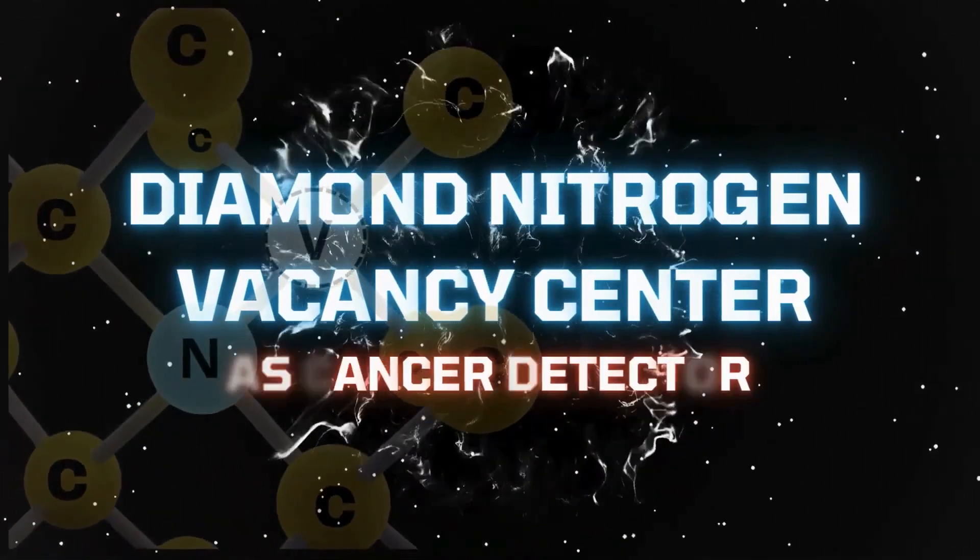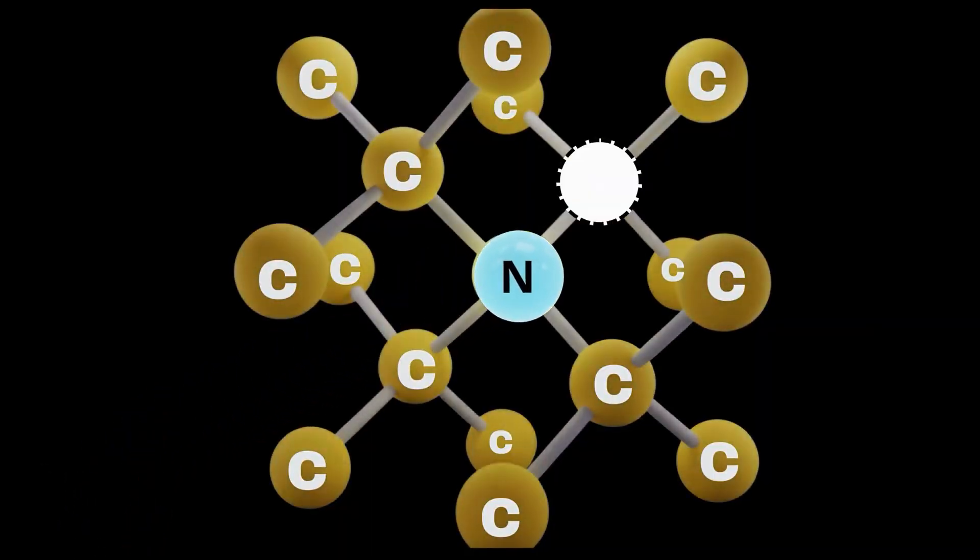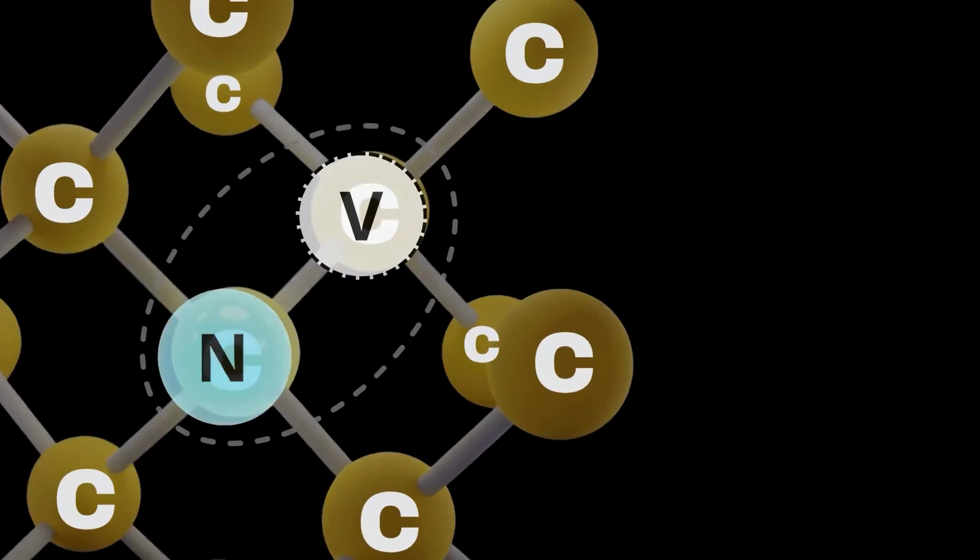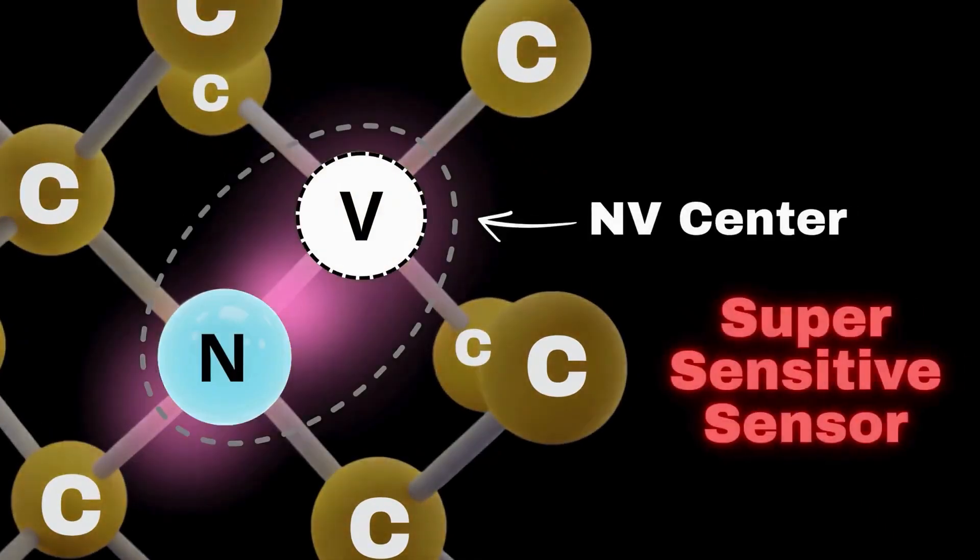By using a flowing diamond smaller than a grain of dust. Inside a diamond, swap one carbon atom for nitrogen and leave a hole next to it. You've created a nitrogen vacancy center, an atomic scale imperfection that acts as a quantum sensor.